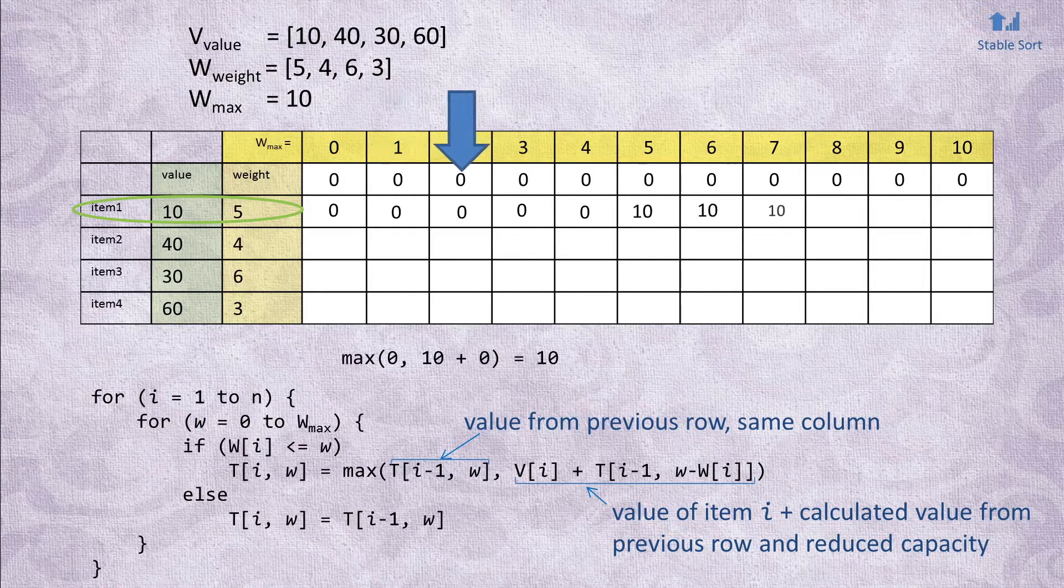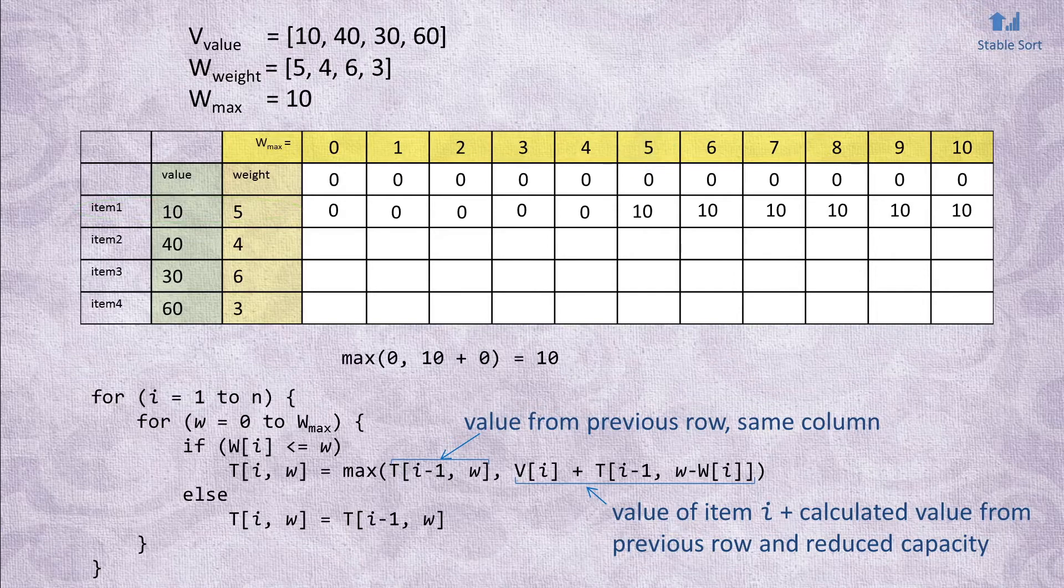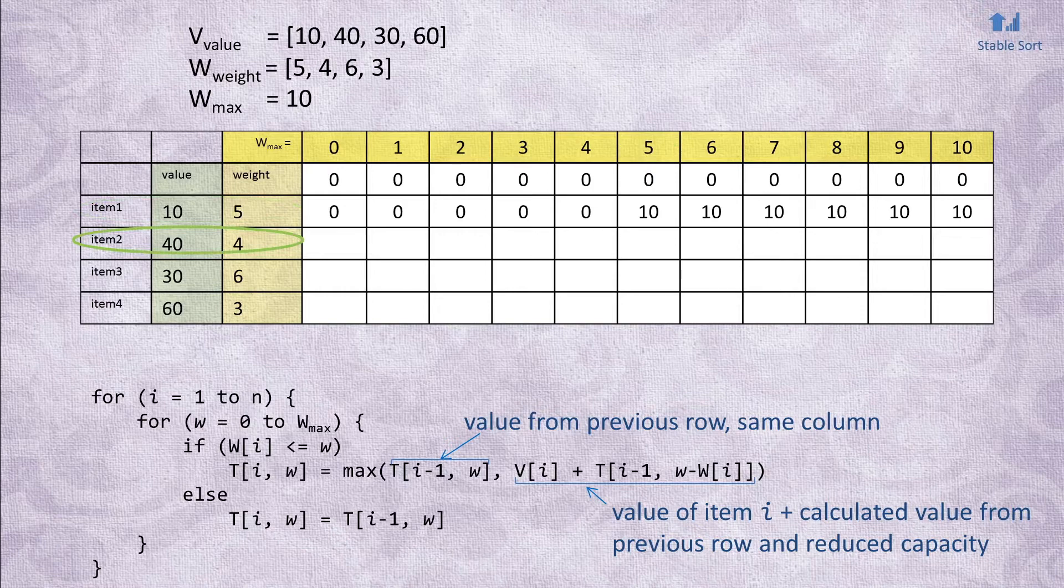It also fits if the capacity is 6 or more. So we repeat steps and write 10 into the rest of the cells of this row. For the following row, we have an item of weight 4. Since we can't fit it into the bag of capacity less than 4, we take the value from the previous row, which happened to be all zeros.